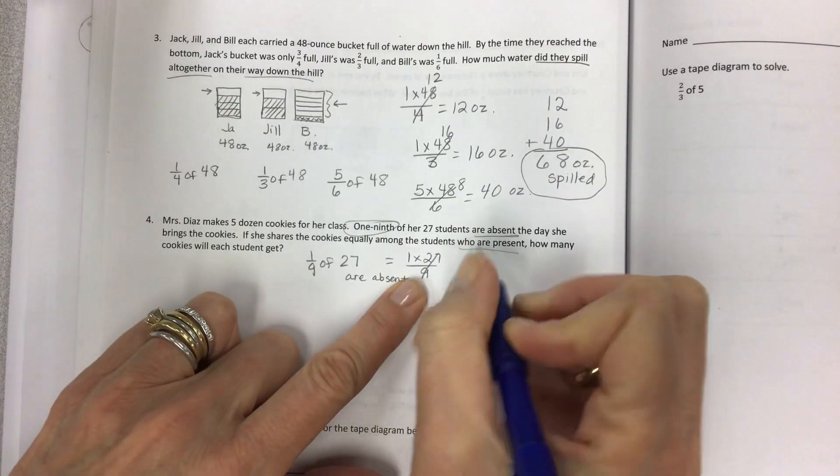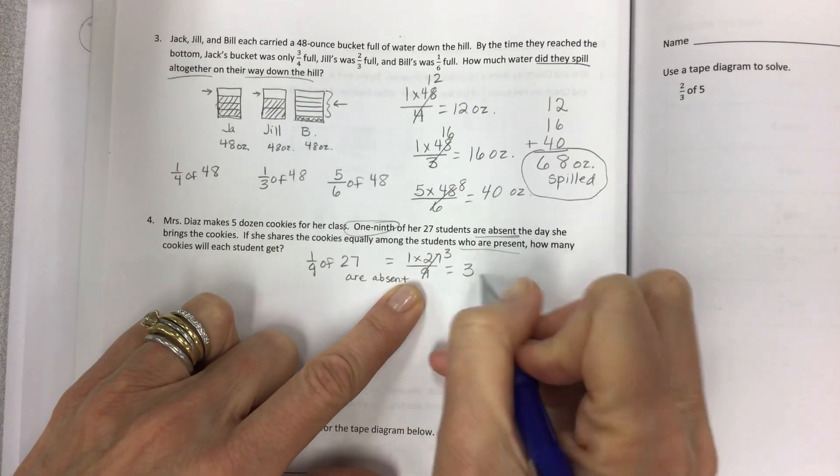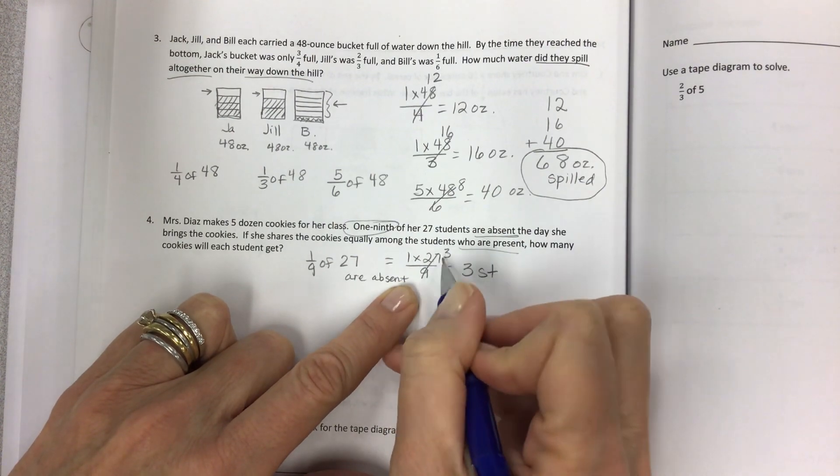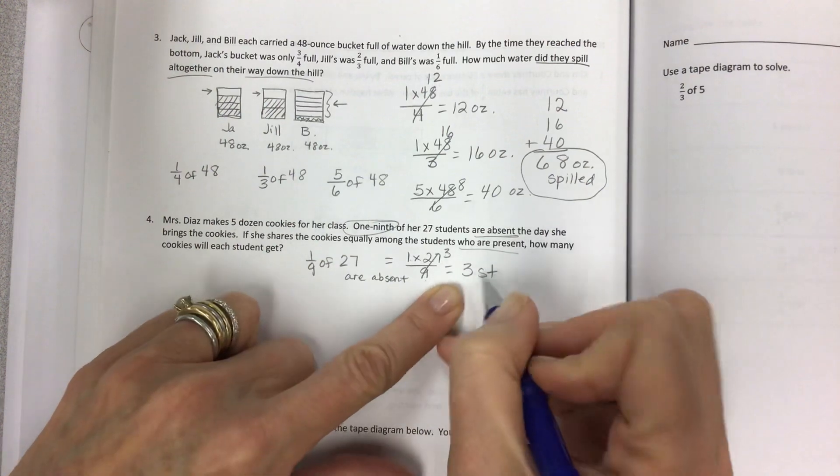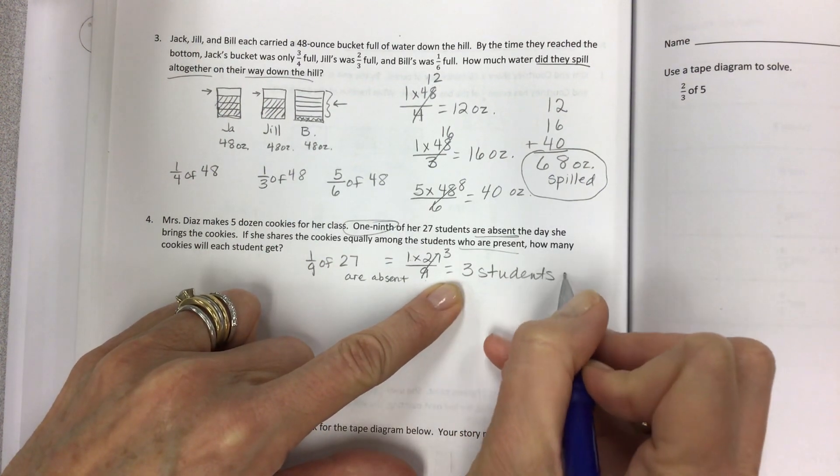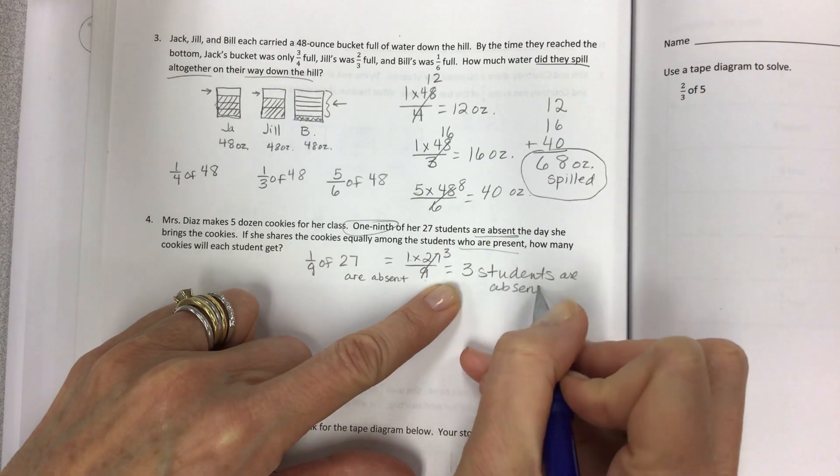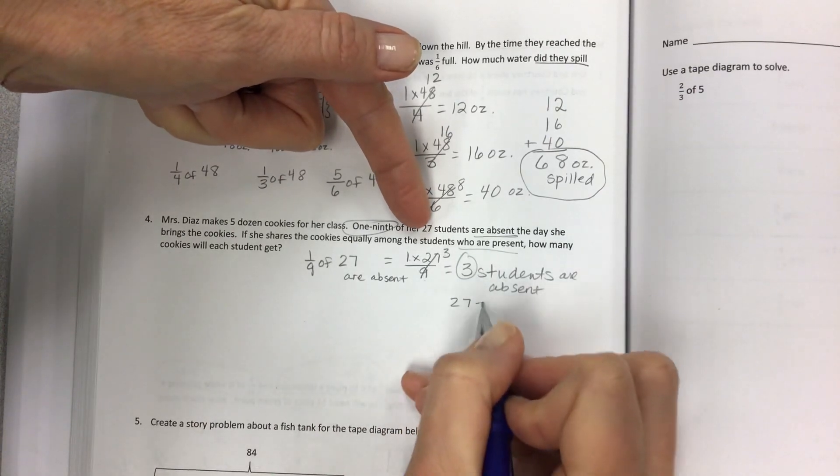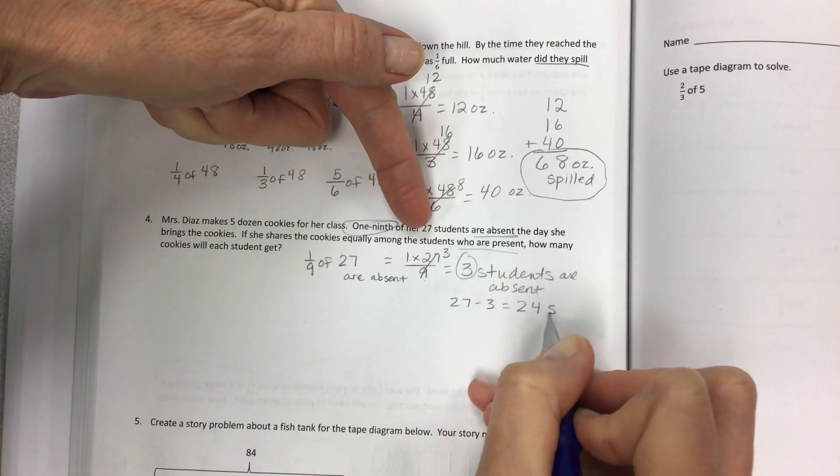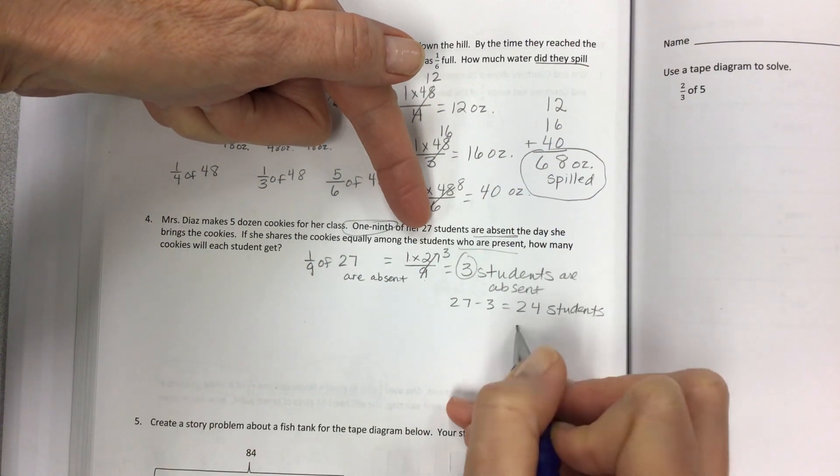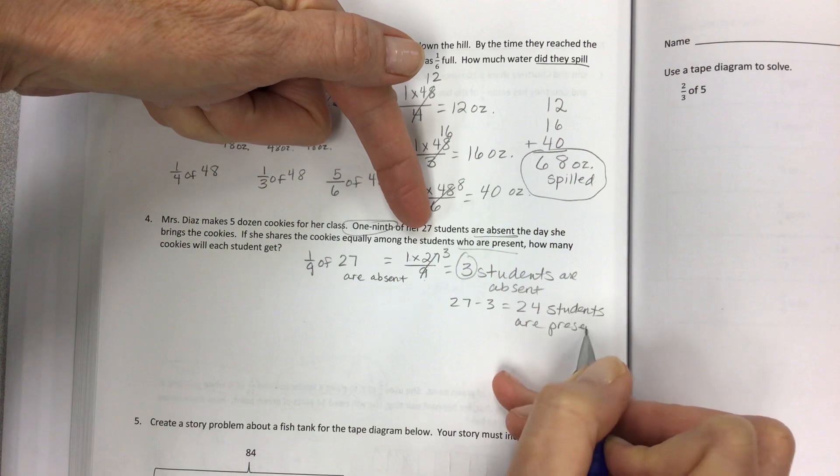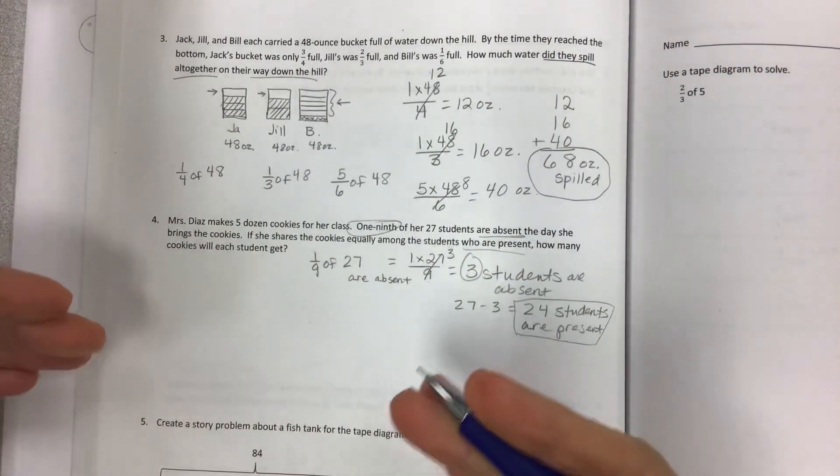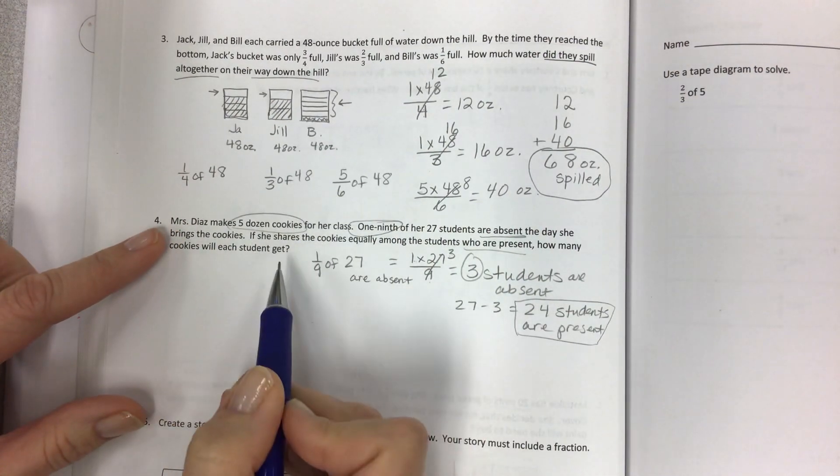So let's start off with one ninth of 27. We need to figure out who's absent. So let's take them out of the equation right away. This is divisible evenly. So one times three. 27 divided by nine is three. This becomes a one. One times three over one is three. Three students are absent. So we're going to take 27 minus three. 24 students are present.